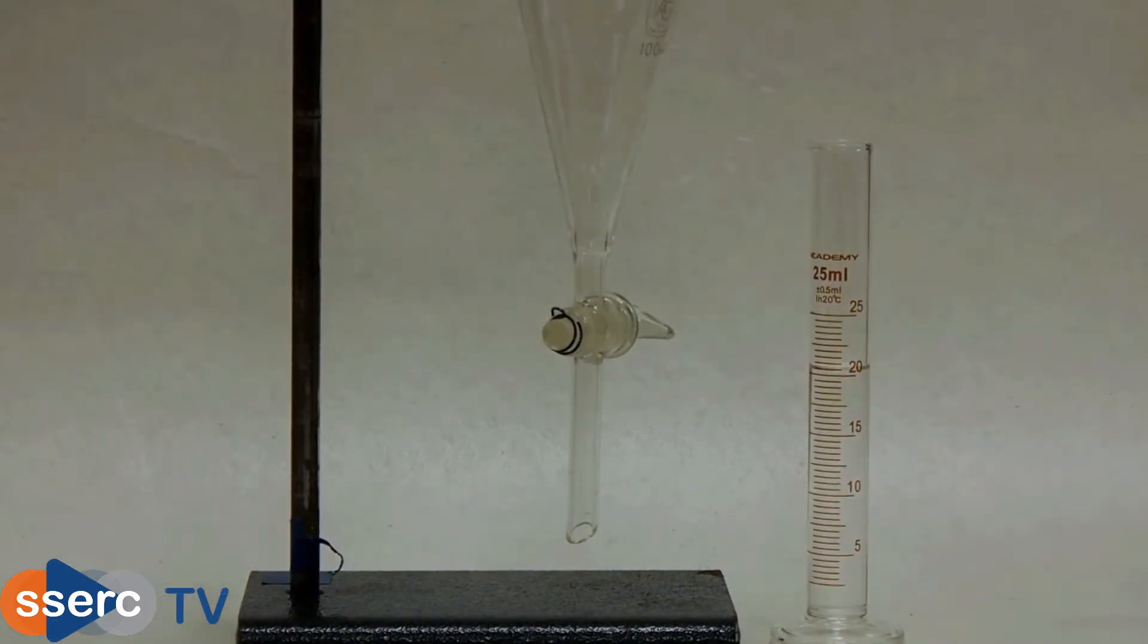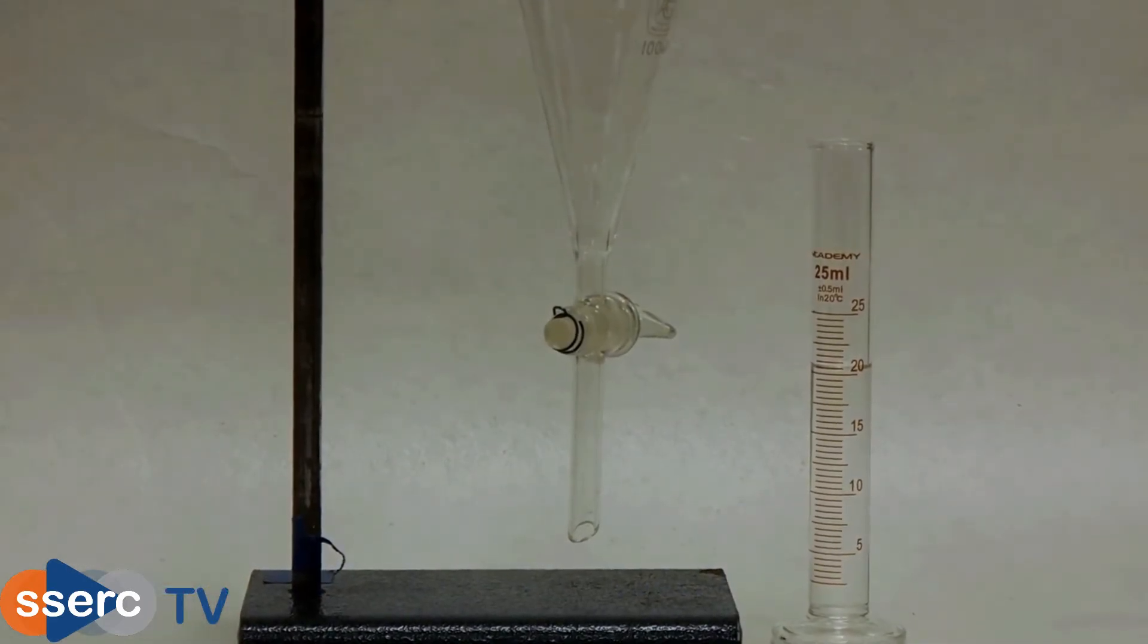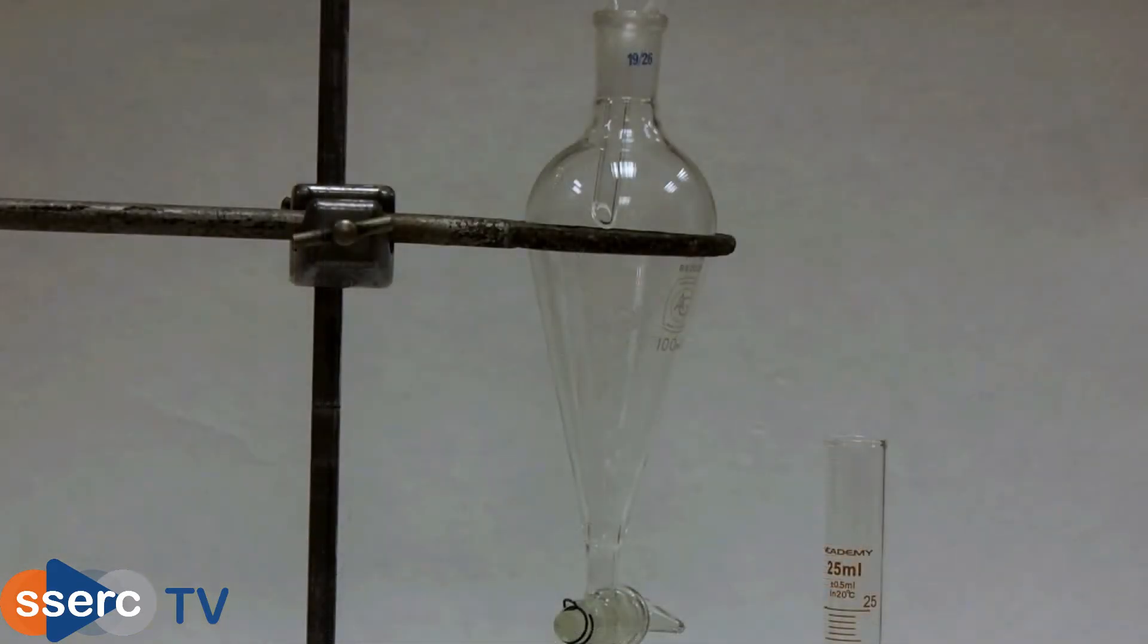Now we need to extract the caffeine from the solution. For this we need a separating funnel like the one shown here. Make sure the tap at the bottom is closed and pour in your aqueous caffeine extract.